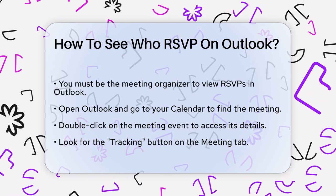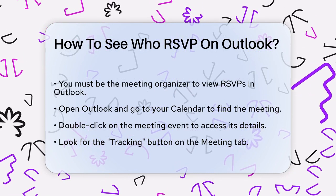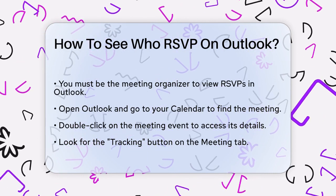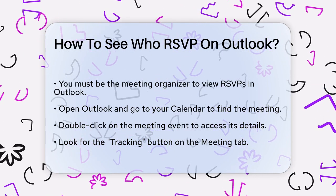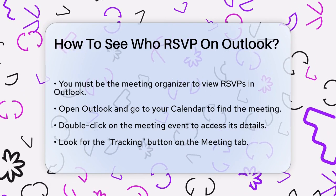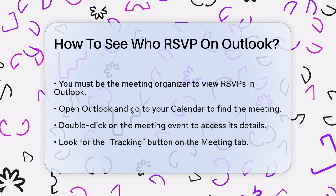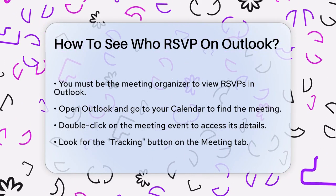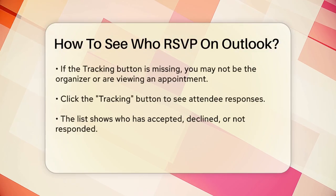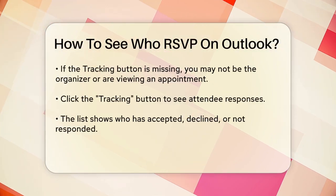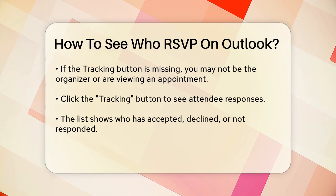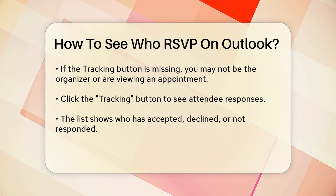Once you're in the meeting details, look for the Tracking button. This button is located at the top of the window on the Meeting tab, next to the Appointment and Scheduling Assistant options. If you don't see the Tracking button, it's because you're either not the meeting organizer or you're looking at an appointment rather than a meeting.